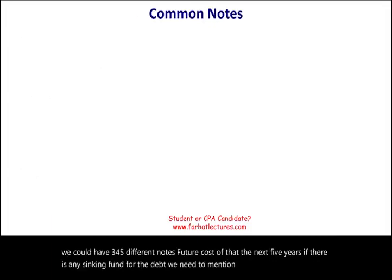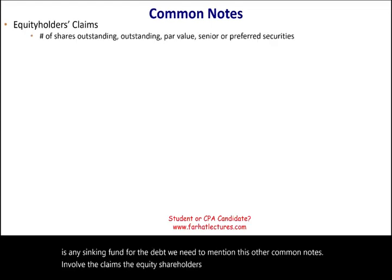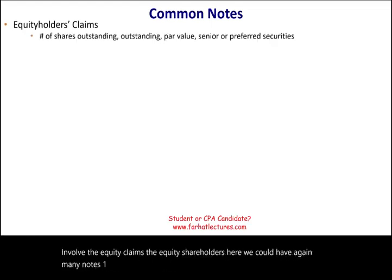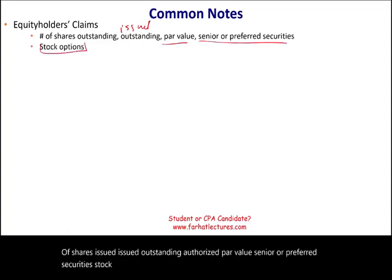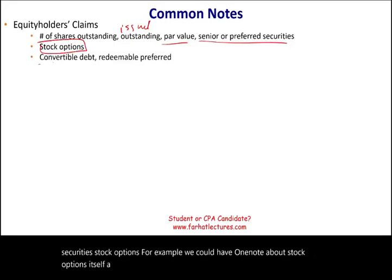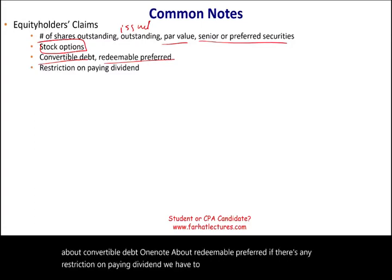Other common notes involve equity claims and equity shareholders. Here we could have many notes: number of shares outstanding, number of shares issued, authorized, par value, senior or preferred securities, stock options — we could have one entire note just about stock options. Also convertible debt, redeemable preferred, and if there's any restriction on paying dividends, we have to disclose all of this in the notes.